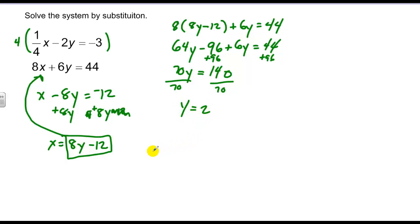I can plug back into any equation I want, either this one here, this one here, or even this one here, because I know it's equivalent to x. And I'll do that. So I get x equals 8 times 2 minus 12, which in this case is 4. And 4, 2 is my ordered pair solution.